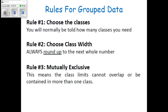Rules for group data: Rule number one — choose the classes; you will normally be told how many classes you need. Determine the limits of the class intervals, which is a very important step. Then choose class width, always rounding up to the next whole number. Classes must be mutually exclusive — class limits cannot overlap or be contained in more than one class.